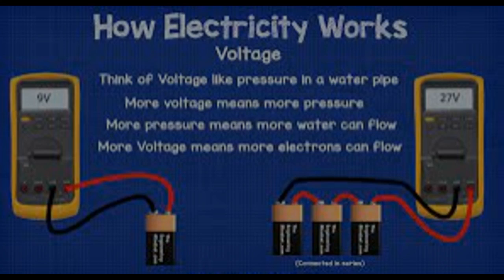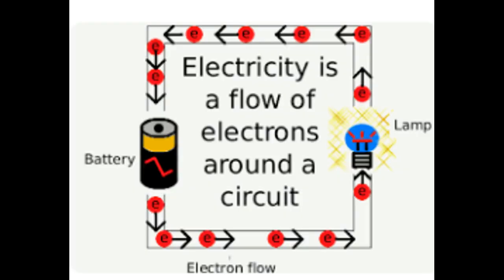When we apply voltage to the circuit, the free electrons move in the circuit in the same direction.